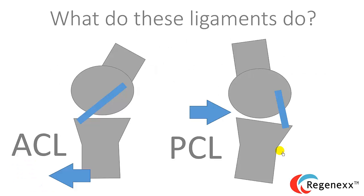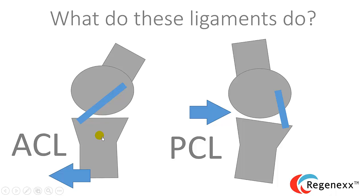What do these ligaments do? The ACL goes in a 45 degree direction. It lives in the middle of the knee, and it prevents the tibia bone from moving forward. The PCL arches across the back of the knee and prevents the whole knee from hyperextending.